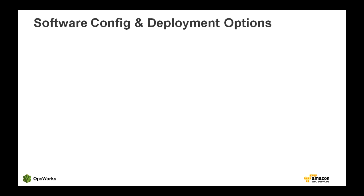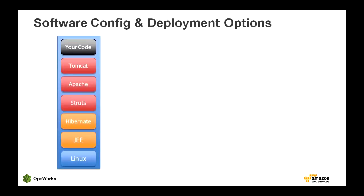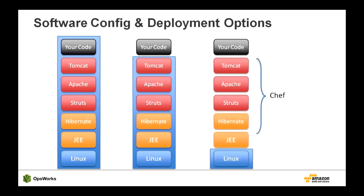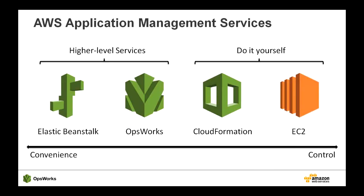It's probably worth covering the AWS deployment options so you understand what OpsWorks provides. Each option provides a choice of flexibility, speed, and control. AMIs are fast to boot but can take more time to bake in your changes. Tools like Elastic Beanstalk let you take advantage of pre-configured AMIs and dynamically update your code. And then OpsWorks lets you build from a base AMI and layer in your changes using Chef recipes. Let me give a little more background on each of the application management services that AWS offers, and describe how OpsWorks is different — it really comes down to the level of convenience and control that you need.